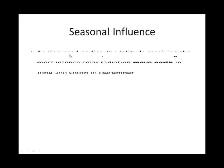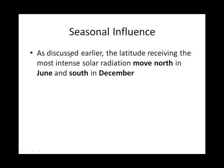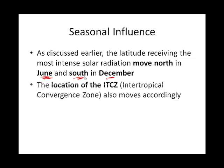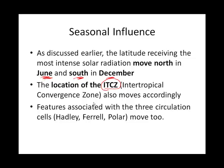The other thing, other than land, that influences these cells is seasonal influence. As the Earth orbits the sun throughout the course of a year, because of its tilt, the angle of the sun is different for different latitudes. Specifically, in June, the northern hemisphere gets the most solar radiation, and in December, the southern hemisphere gets the most solar radiation. So we're going to see a wandering intertropical convergence zone — it wanders according to where the most intense energy from the sun is.